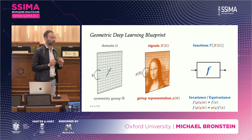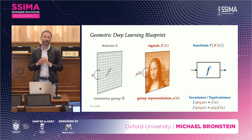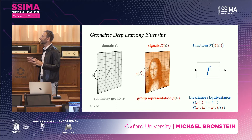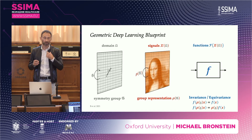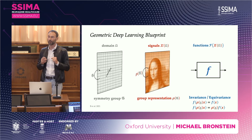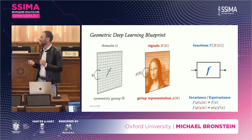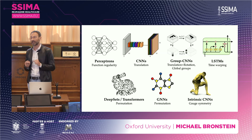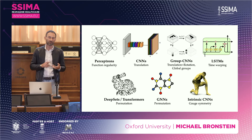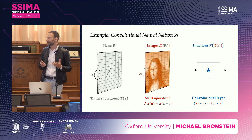In this blueprint, we talk about a domain on which our data lives. On this domain I can define its structure by defining a symmetry group that acts on points of the domain. We have data living on the domain on which this group acts through appropriate group representations, and then we define functions that obey the properties of the symmetry group in the form of invariance and equivariance. We show that you can derive standard architectures — CNNs, GNNs, LSTMs — as particular settings by choosing the appropriate domain and symmetry group.